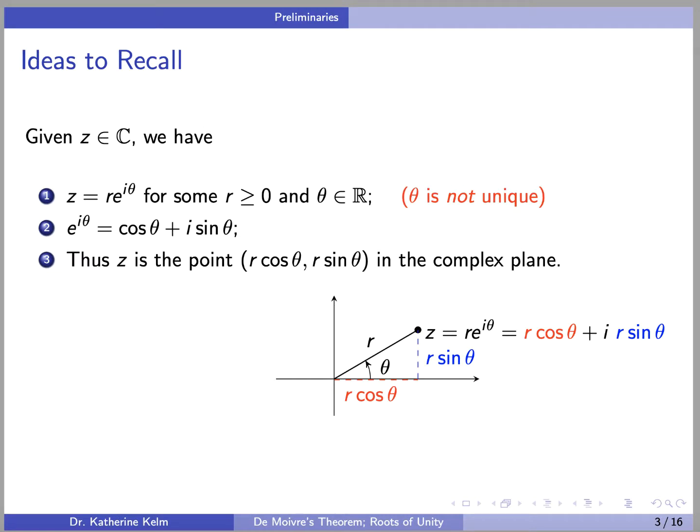Recall that given a complex number z, we can write z in the form r·e^(iθ), for some r ≥ 0 and θ a real number. Theta is not unique; in fact, anything coterminal with θ will result in the same point in the complex plane. e^(iθ) can be expressed in rectangular form as cos(θ) + i·sin(θ). There is a quick sketch of a proof on the next page — it uses series.